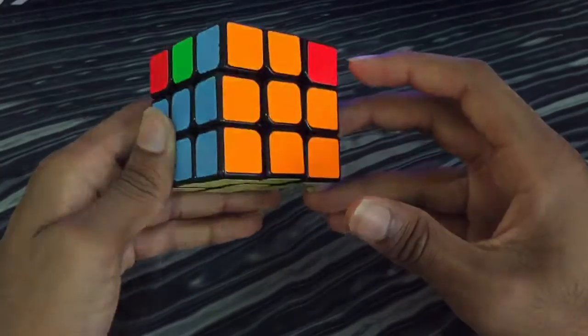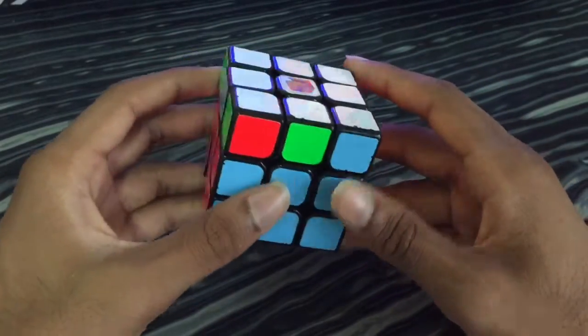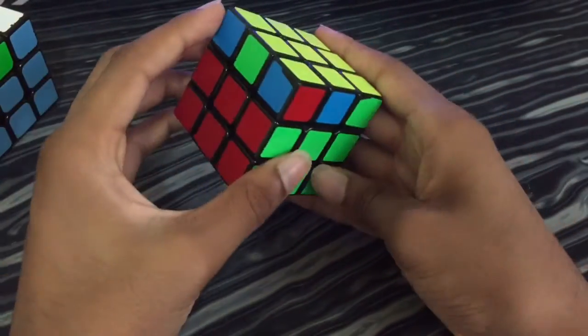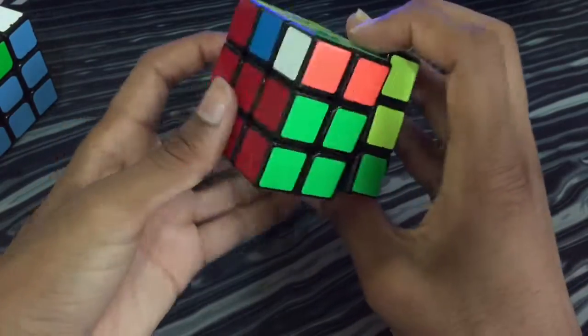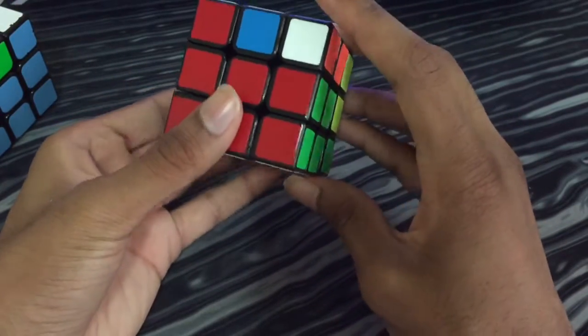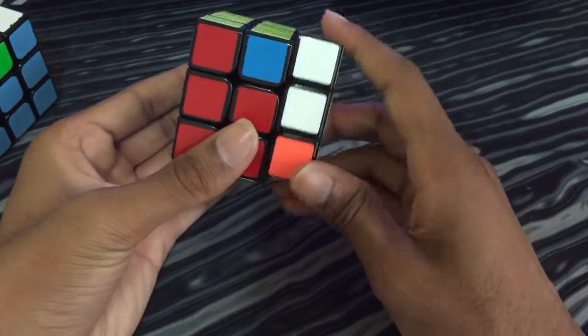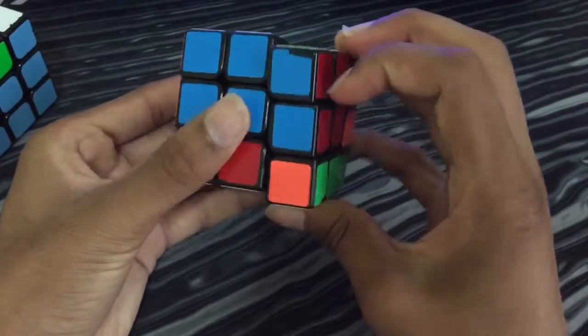I struggle with these types of G-perms using the regular algorithms. The regular one that most people learn when they first start learning PLLs, I just lock up a lot on it.